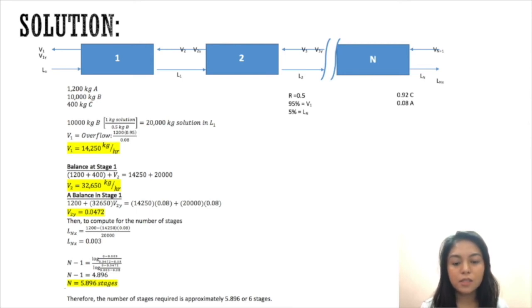For the component A balance in stage one, we add the mass of the copper sulfate plus the V₂ flow rate multiplied by V₂y equal to V₁ multiplied by its composition plus the kg solution in the underflow multiplied by its composition in the exit. We get V₂y which equals 0.0472.